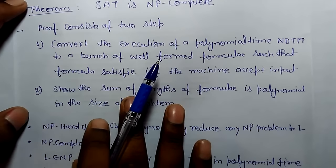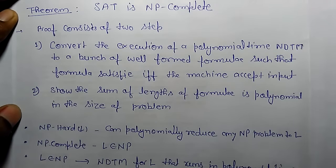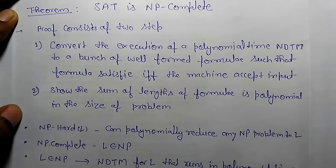The first step is to convert the execution of a polynomial-time non-deterministic Turing machine to a bunch of well-formed formulas such that the formula satisfies if and only if the machine accepts the input. Second, the sum of the length of the formulas is polynomial in the size of the problem. If we follow these two steps, we can prove SAT is NP-complete.